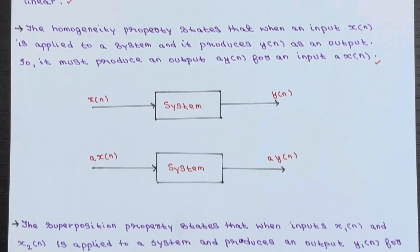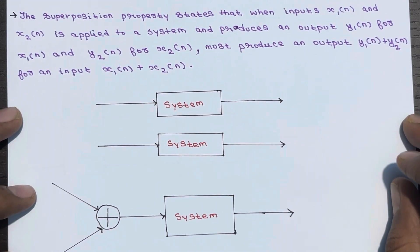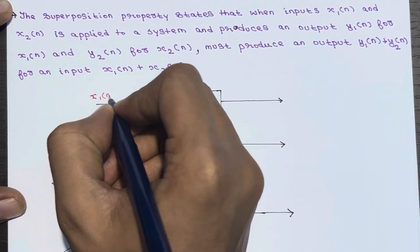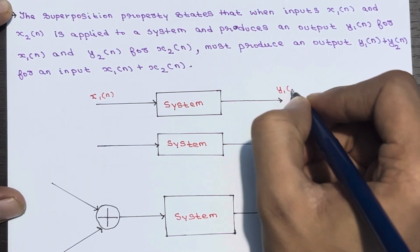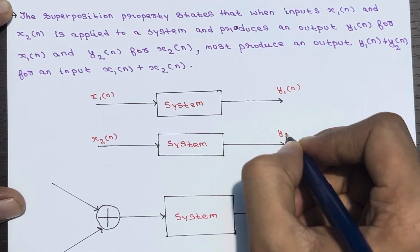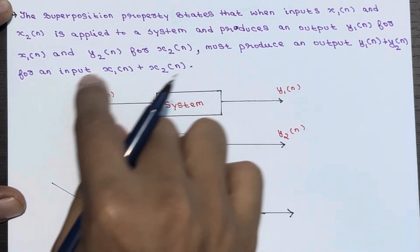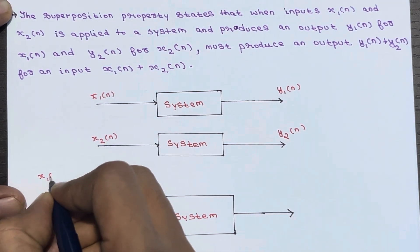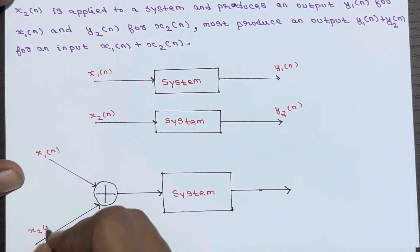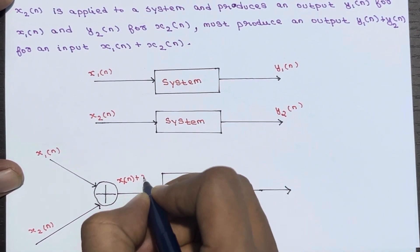The next property is the superposition property. Suppose I have a system: applying x1(n) gives output y1(n), and applying x2(n) gives output y2(n). Now if we apply these signals combined — x1(n) and x2(n) sent to an adder — we get x1(n) plus x2(n) as the combined input to the system.